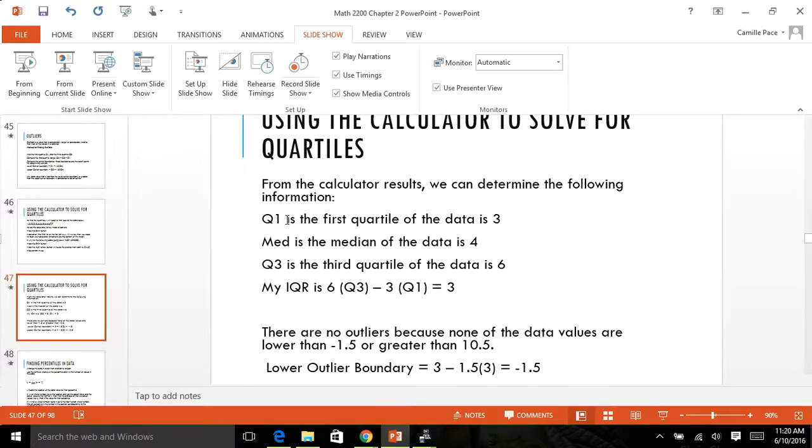So here I go. So as I said before, Q1 is three, the median is four, Q3 is six. To get my IQR, I do six minus three gives me three. So the first thing I'm going to do, I'm going to see my lower values.